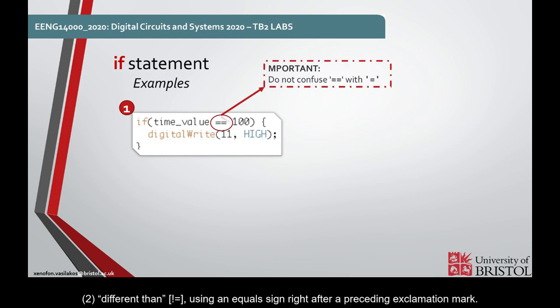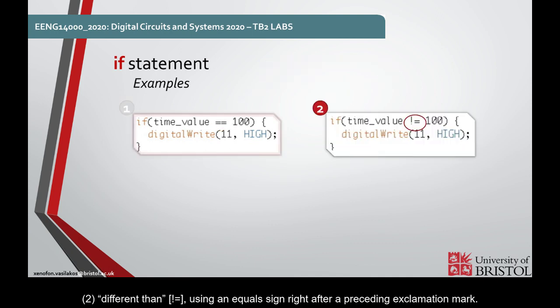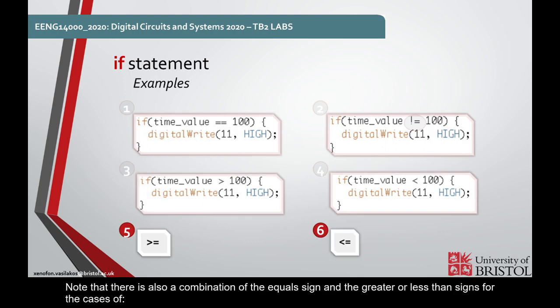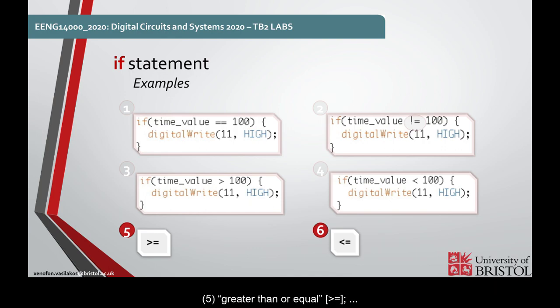The second one is different than, using an equal sign right after a preceding exclamation mark. The third one is greater than, that's the usual sign that you are used to. The fourth one is less than, again the way that you know it. Note that there is also a combination of the equal sign and the greater or less than signs for the cases of greater than or equal and less than or equal.